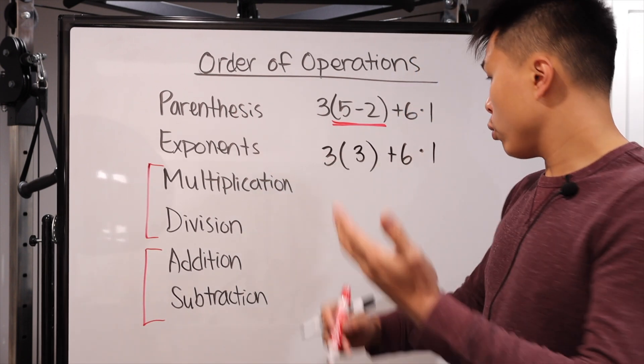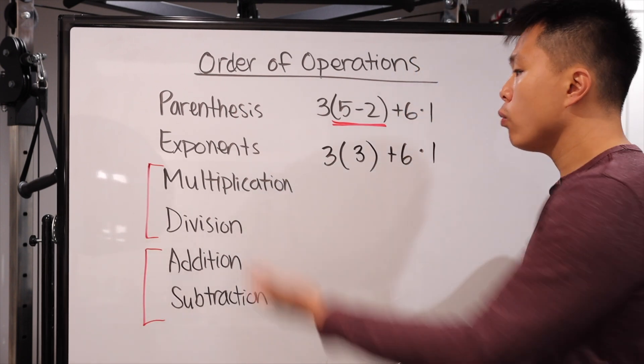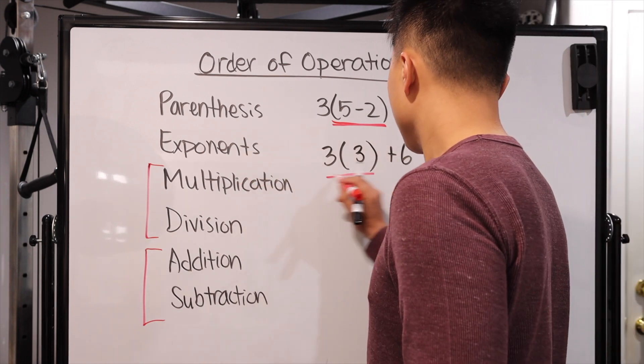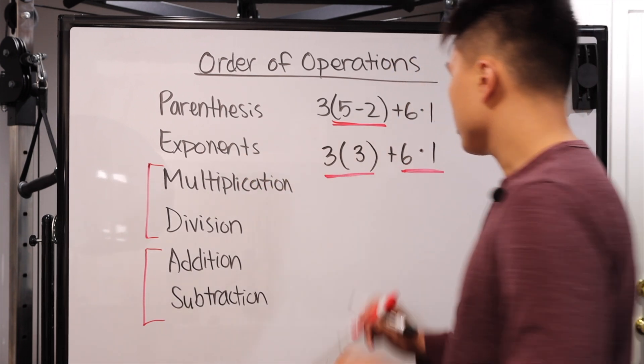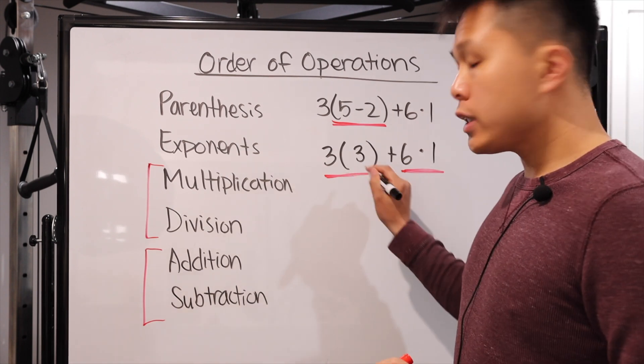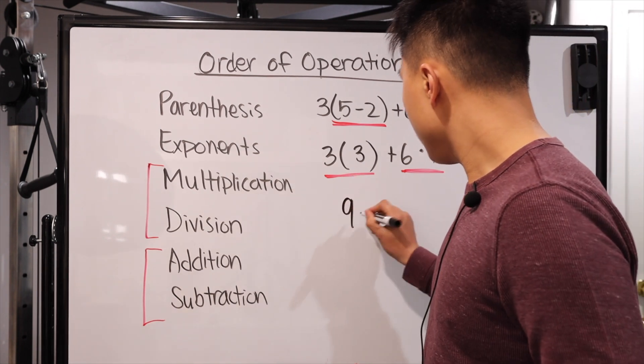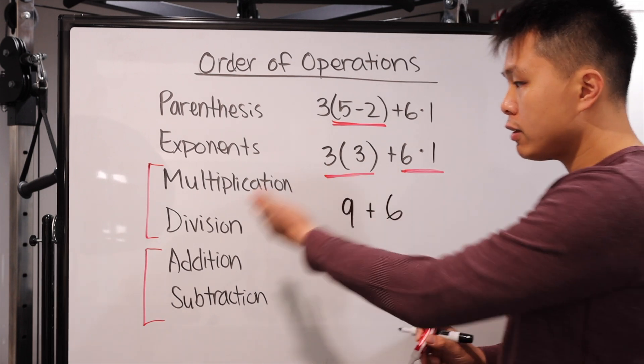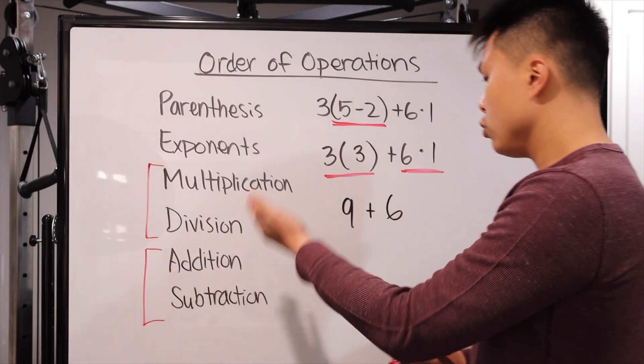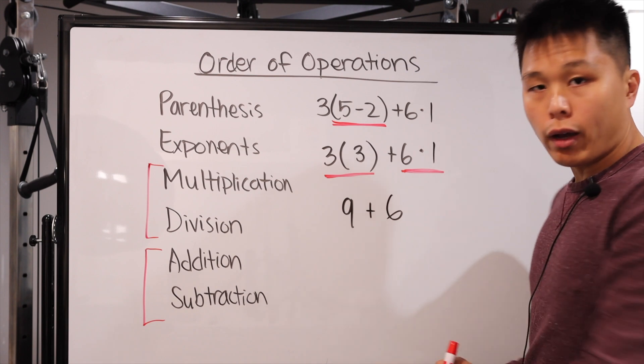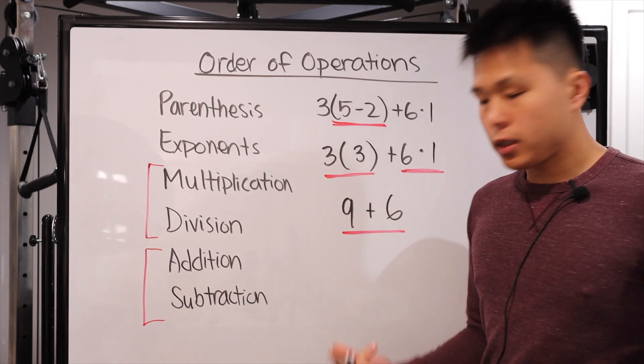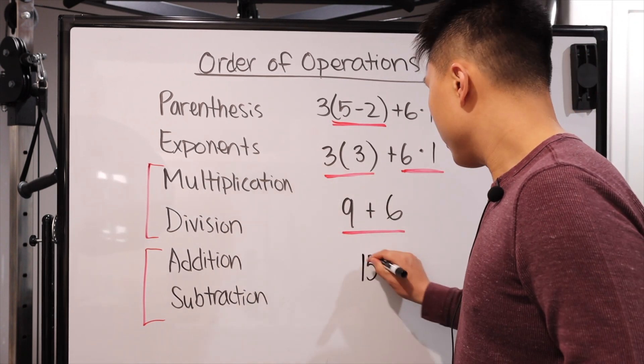Are there exponents? No, none. So then we would go with multiplication. Now there's two multiplications here. There's one right here and one right here. So in that case, 3 times 3 is 9, and we have the plus sign and 6 times 1 is just 6. Do we have divisions? No. Do we have addition or subtraction? We do have addition. So this is just the final step. 9 plus 6, which gives us 15.